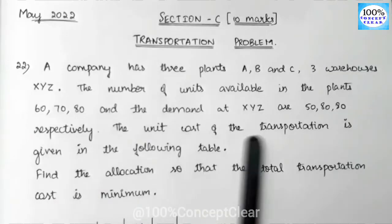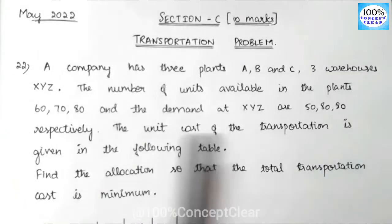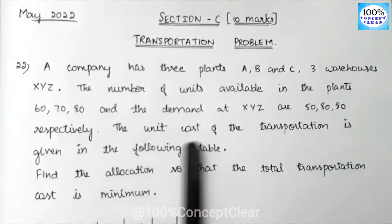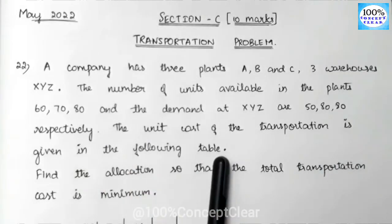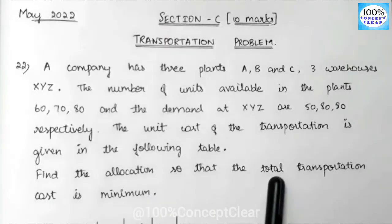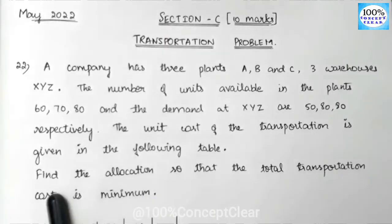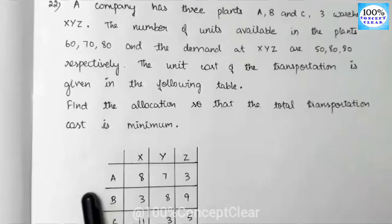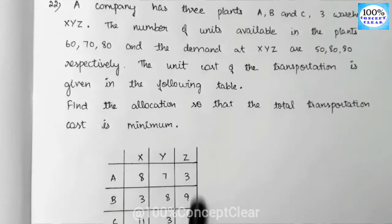The unit cost of the transportation is given in the following table. Find the allocation so that the total transportation cost is minimum. There is a table provided.